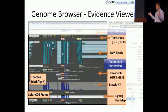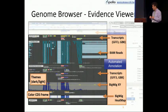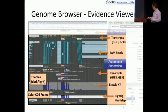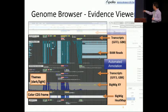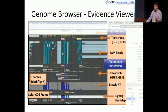I like to think about this in three parts, or the Apollo stack. First is the evidence. When you create your automated annotations or collect other data, it comes into the evidence section at the bottom. Here we have some examples of transcripts, BAM reads, and bigwig files displayed. There are a couple of different themes — here I'm showing the dark theme. We can color the CDS frames. This is what you use to basically collect and review the data.